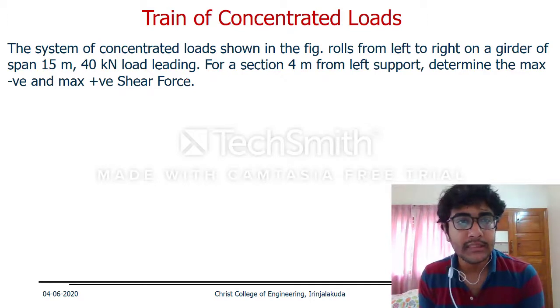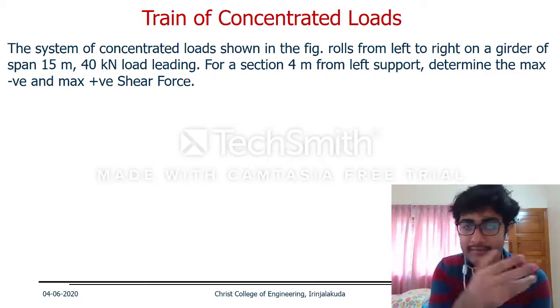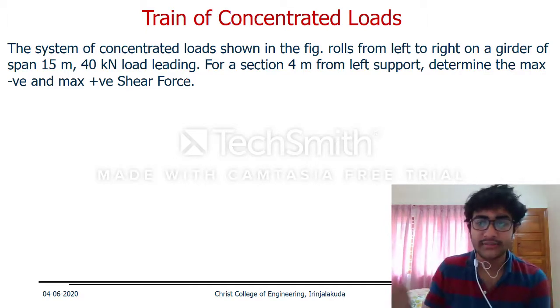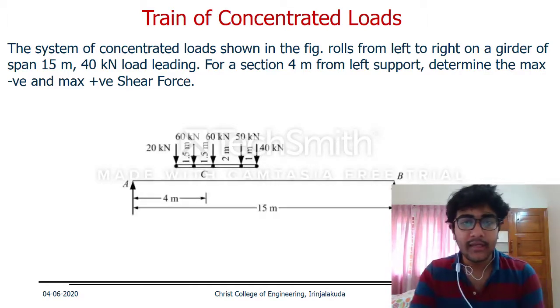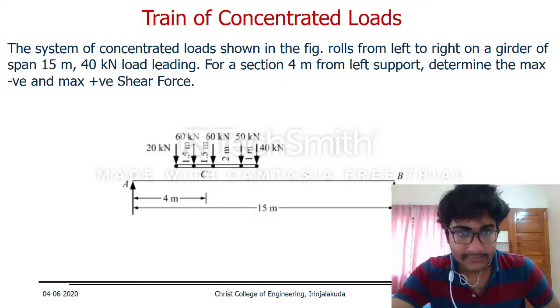The length of beam L is 15 meters. We need to find the section at 4 meters from the left support. The distance of small i is going to be 4 meters, and the other distance will be L minus i, which is 11 meters. The figure shows the beam AB and the train of loads.